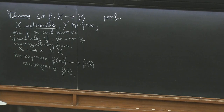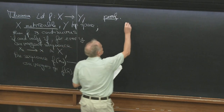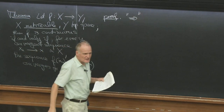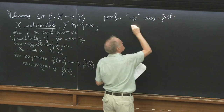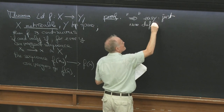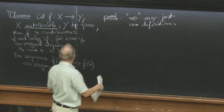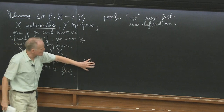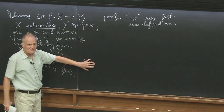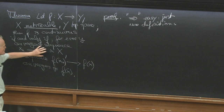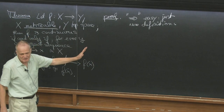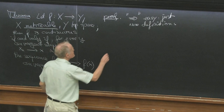One direction is an exercise which is easy and I will not do. If f is continuous, that direction is easy — just use definitions. If x_n converges to x, we take a neighborhood of f(x), its preimage is a neighborhood of x, and x_n converges to x means x_n is in this neighborhood for n large, so f(x_n) is in the neighborhood for n large. The other direction is more interesting.